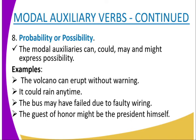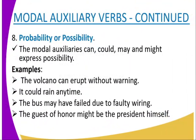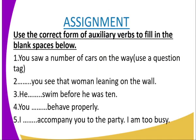Modal auxiliary verbs can also express probability and possibility, using 'can,' 'could,' 'may,' and 'might.' For example: 'The volcano can erupt without warning' expresses possibility. 'It could rain anytime' expresses possibility. 'The bus failed due to faulty wiring' expresses probability or possibility. 'The guest of honor might be the president himself' — 'might' expresses probability or possibility.